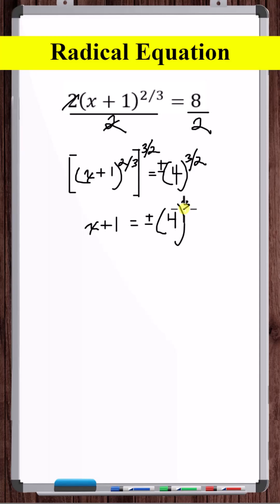We're left with, what is 4 to the 3 halves power? Well, 4 cubed is 64, and the principal root of 64 is 8.